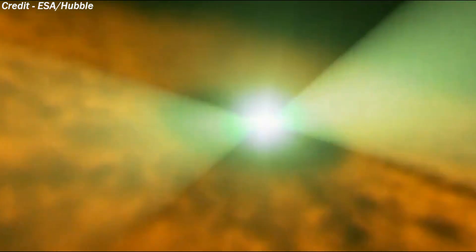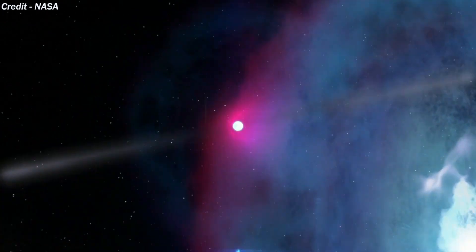Pulsars are rotating neutron stars observed to have pulses of radiation at very regular intervals that typically range from milliseconds to seconds. If a pulsar randomly enters our solar system,